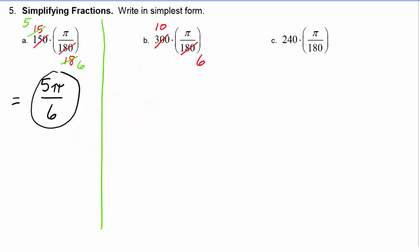And then furthermore we can reduce that because two goes into ten five times. Two goes into six three times. So this fraction reduces to be five pi over three.